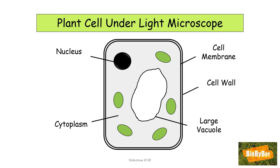The cell wall is fully permeable, allowing free passage of chemicals in and out of the cell even though it is stronger than the cell membrane. Lastly, the plant cell has structures called chloroplasts — S for structures. The chloroplast contains the green pigment called chlorophyll. Plant cells have large numbers of chloroplasts which allow them to carry out photosynthesis and make their own food.